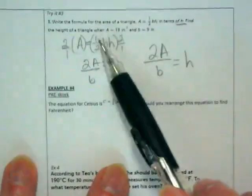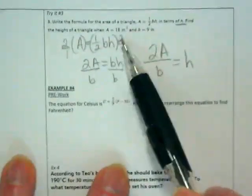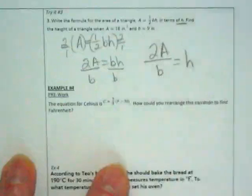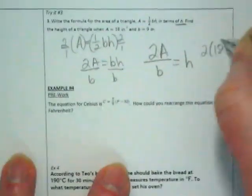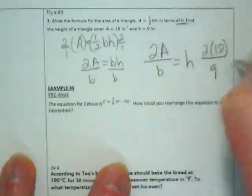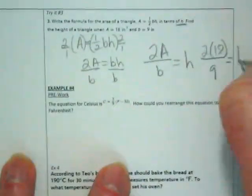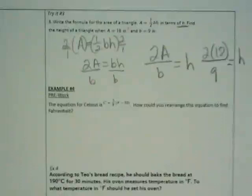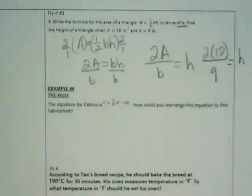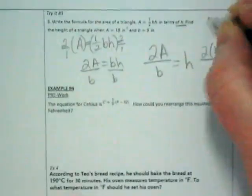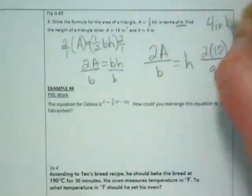This is saying, what if we have a triangle where the area is 18 and the base is 9? 2 times 18 divided by 9 is equal to the height. 2 times 18 is 36 divided by 9 is 4. So 4 inches high.